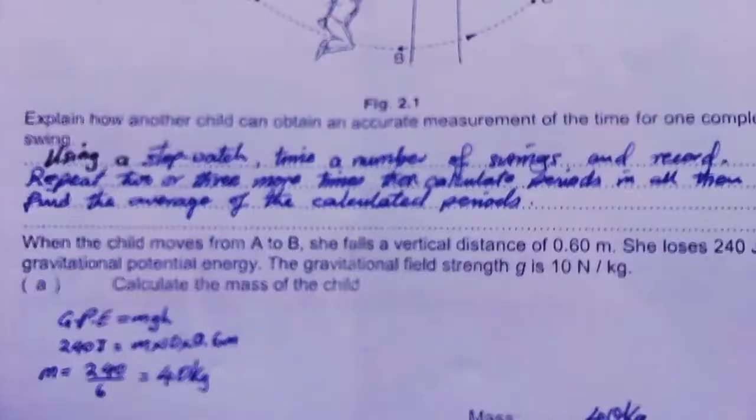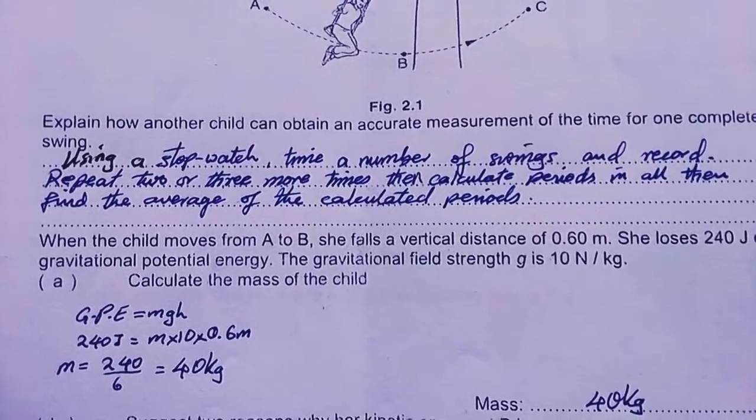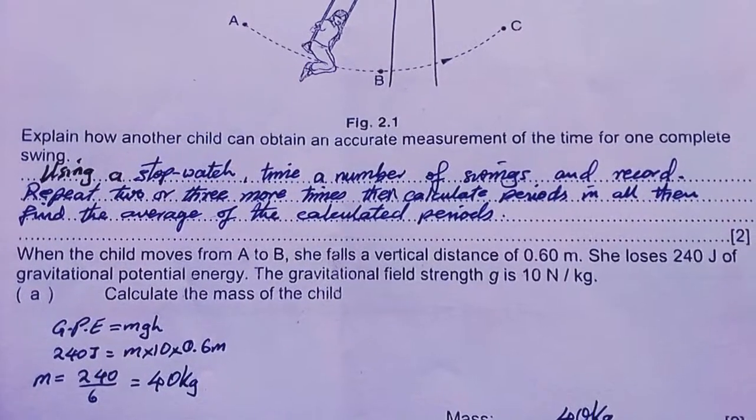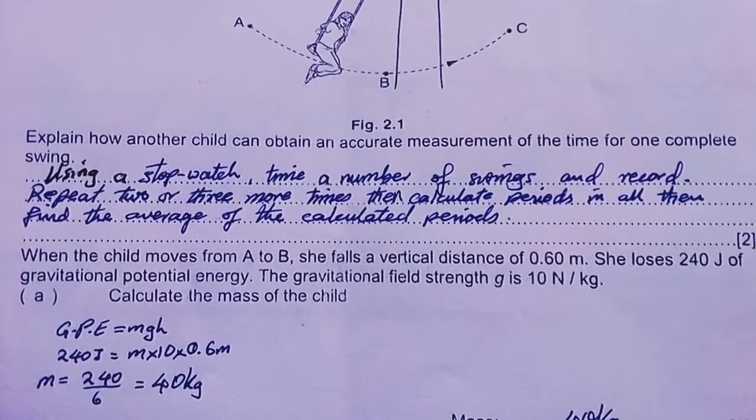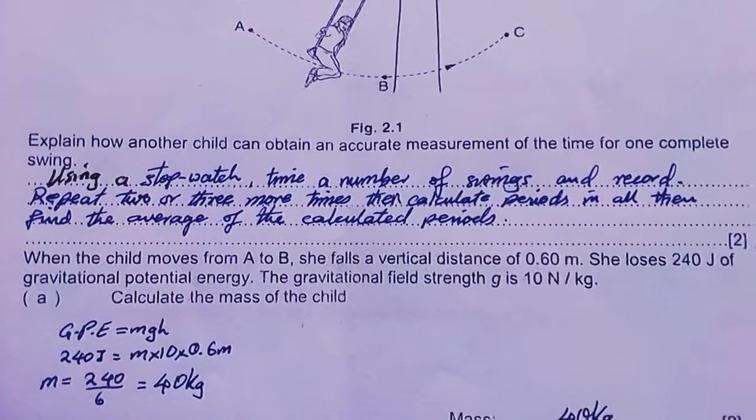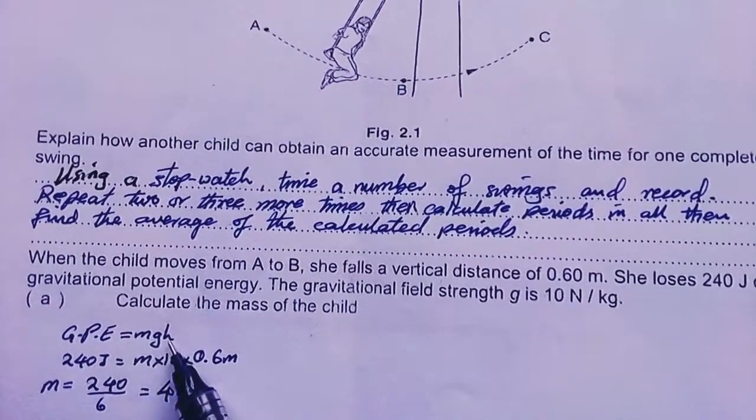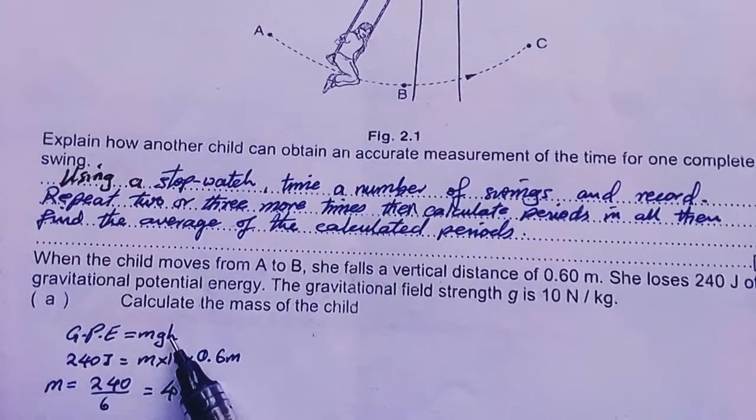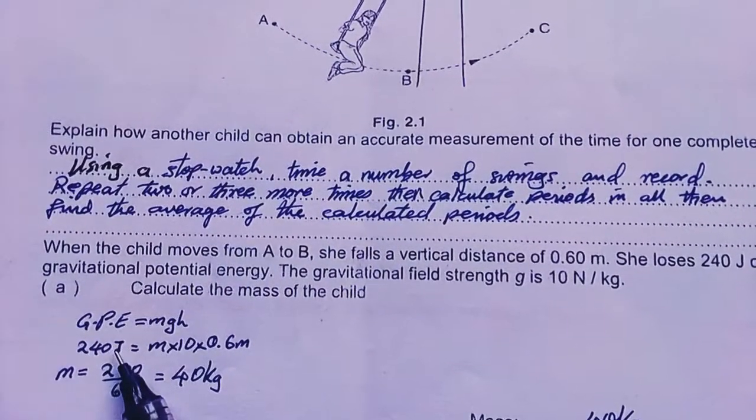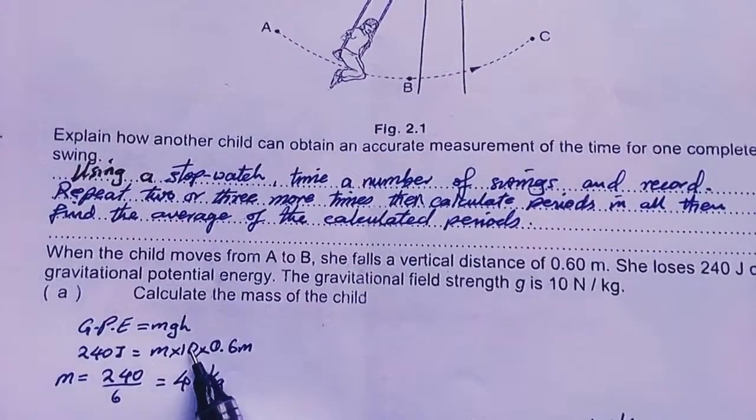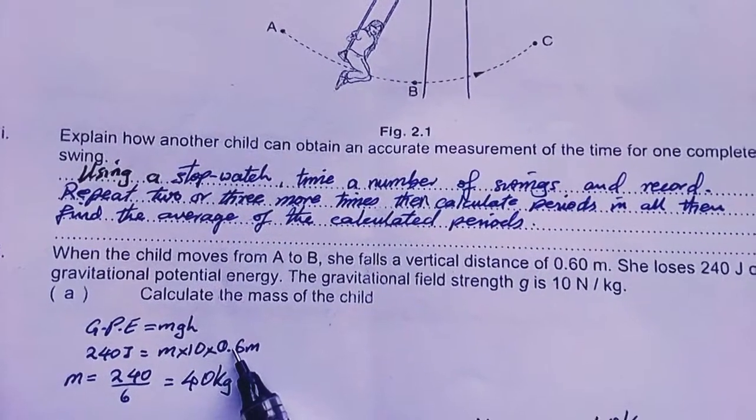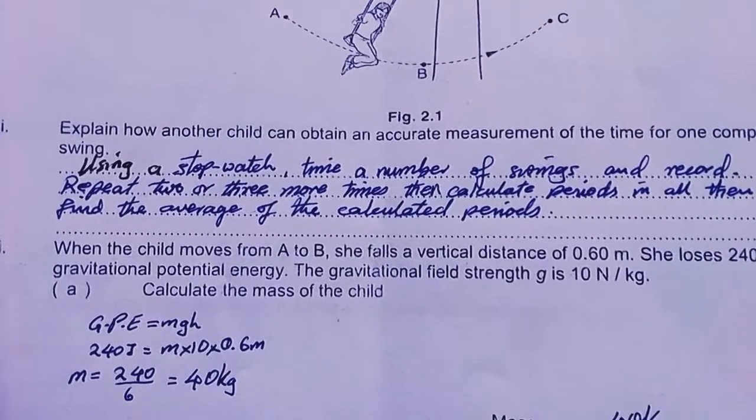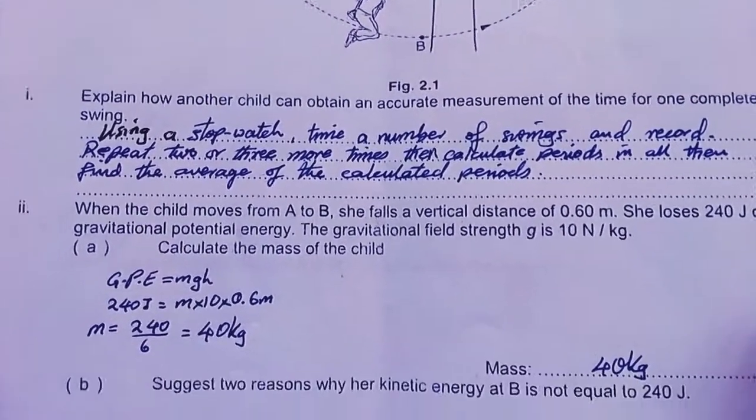When the child moves from A to B, she falls a vertical distance of 0.6 meters. She loses 240 joules of gravitational potential energy. The gravitational field is 10. Calculate the mass of the child. The formula for GPE is MGH, gravitational potential energy. Therefore, the energy she loses is this much. Mass we don't know, G is a constant, the height she falls through is 0.6 meters. When we do our algebra, the mass comes out as 40 kilograms.